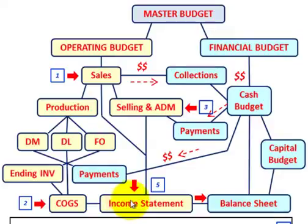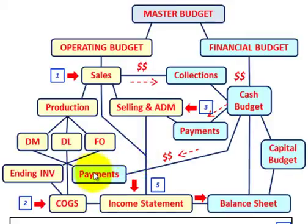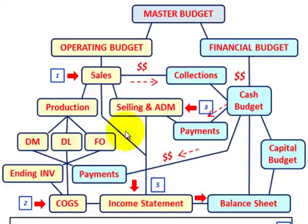The income statement also interacts with our financial budgets. From our cash budget's perspective, revenues from the sales budget flow into the cash budget. Payments going out of the cash budget include selling and administration expenses, as well as payments for direct materials, direct labor, and factory overhead. You can see how the income statement budget flows through the master budget and ultimately back into the balance sheet budget.